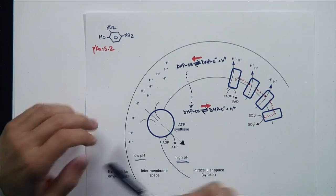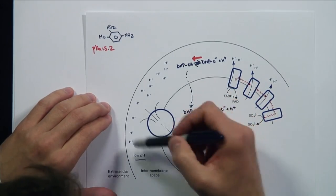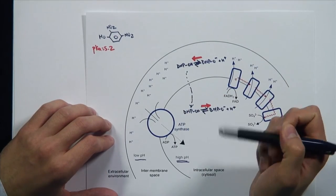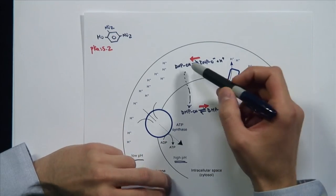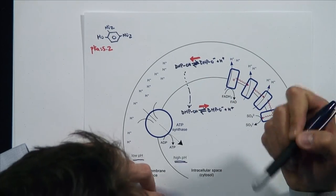Dinitrophenol carries protons in parallel with the protons flowing through ATP synthase, so it discharges the electrochemical gradient without producing ATP. Just as short-circuiting a battery causes it to heat up, dinitrophenol — by taking protons from the intermembrane space back into the intracellular space — generates heat. Therefore, we can answer part C by saying that the medium in which these cells are growing is going to heat up when we add dinitrophenol.